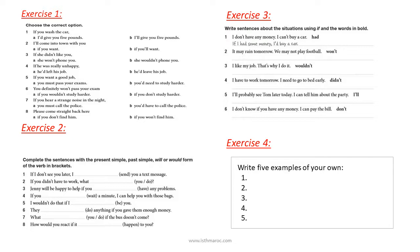Continuing exercise two: sentence five — 'I wouldn't do that if I were you.' Six: 'They'll do anything if you give them enough money.' Seven: 'What would you do if the bus doesn't come?' Eight: 'How would you react if it happened to you?' Pay close attention and determine whether each sentence is a first or second conditional.